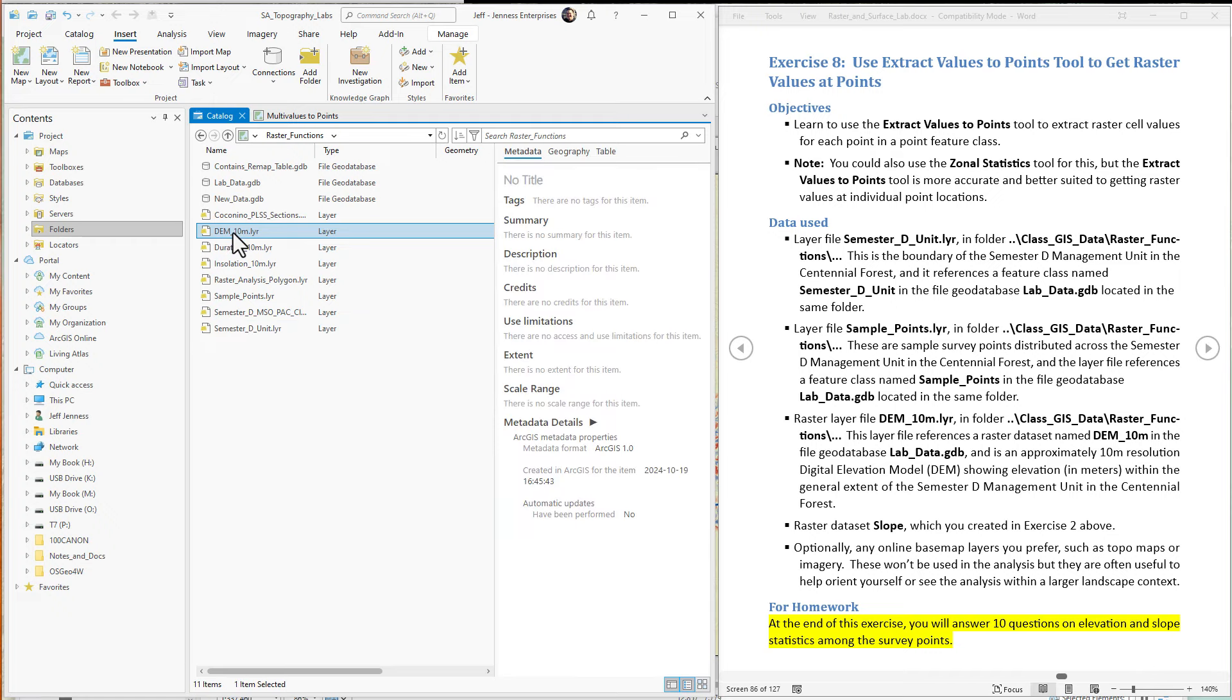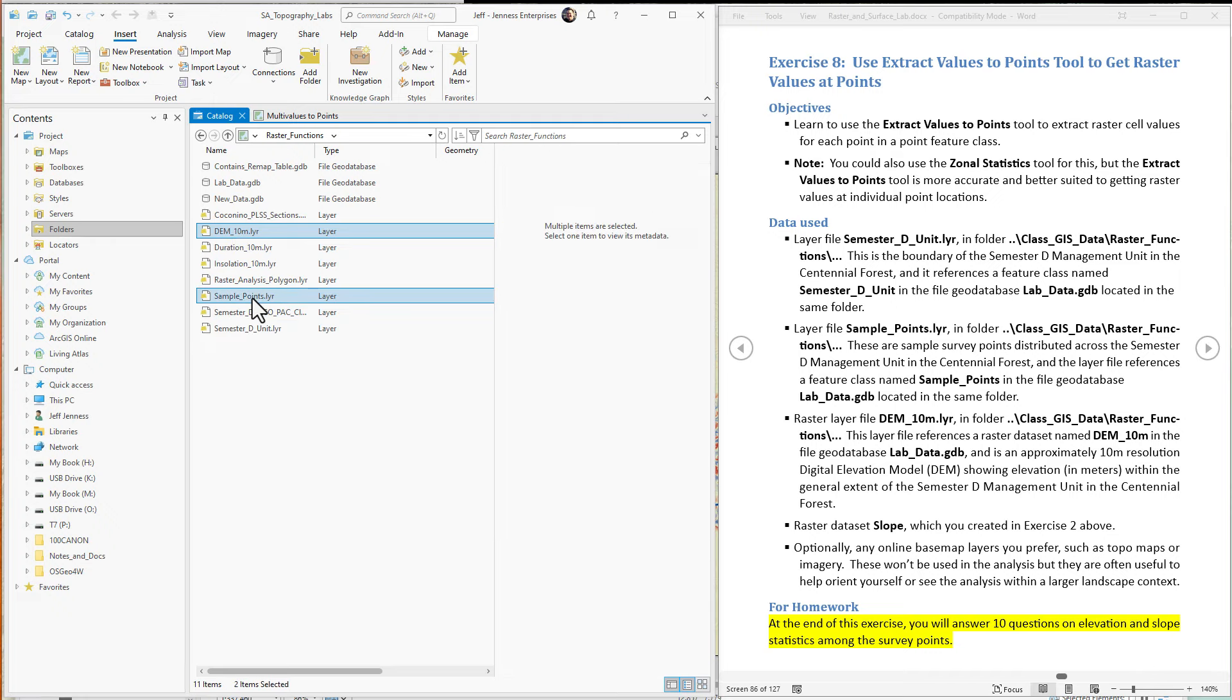So we're going to add the DEM, we're going to add the sample points, and we're going to add the semester D unit. We just right click on that and tell it to add it to the map that we just made.